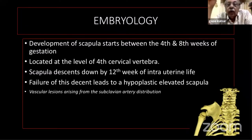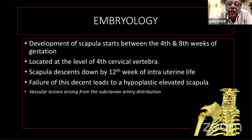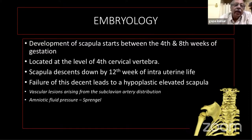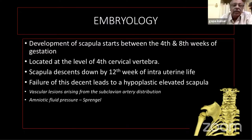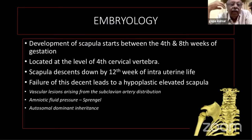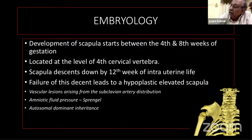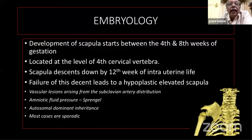What causes this failure of descent? Nobody knows for certain. Various theories exist: one involves vascular lesions arising from the subclavian artery distribution leading to failure of descent. Sprengel himself thought it was due to increased amniotic fluid pressure. Autosomal dominant inheritance has been reported, but most cases seen are sporadic.